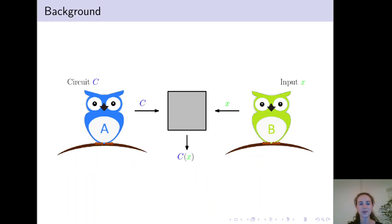Consider the following scenario. Alice holds some circuit C, Bob holds some input X, and they want to jointly evaluate the circuit on input X without revealing their respective secret information.